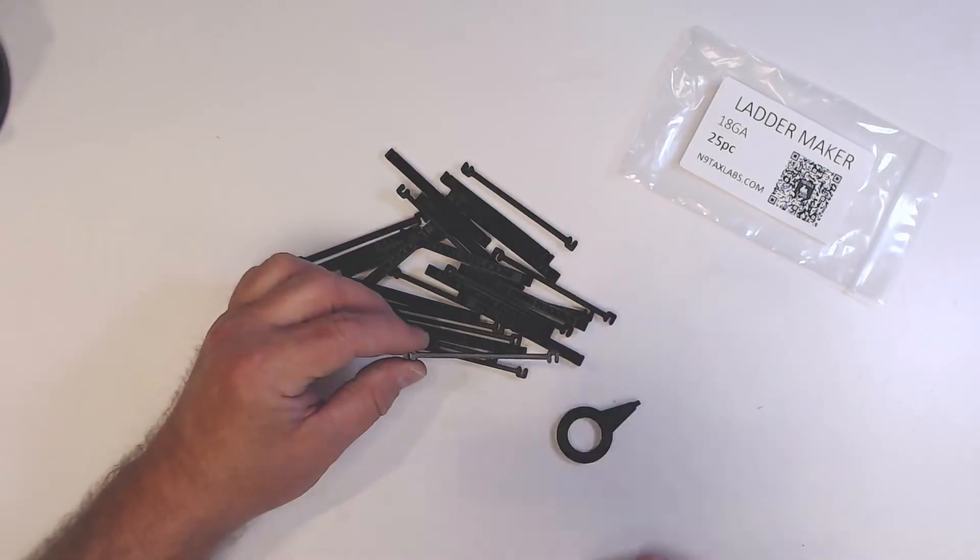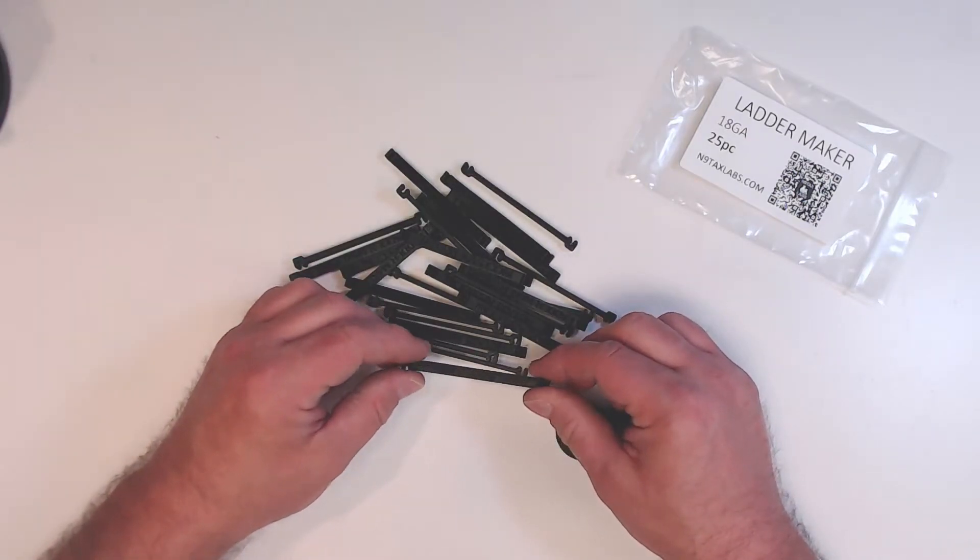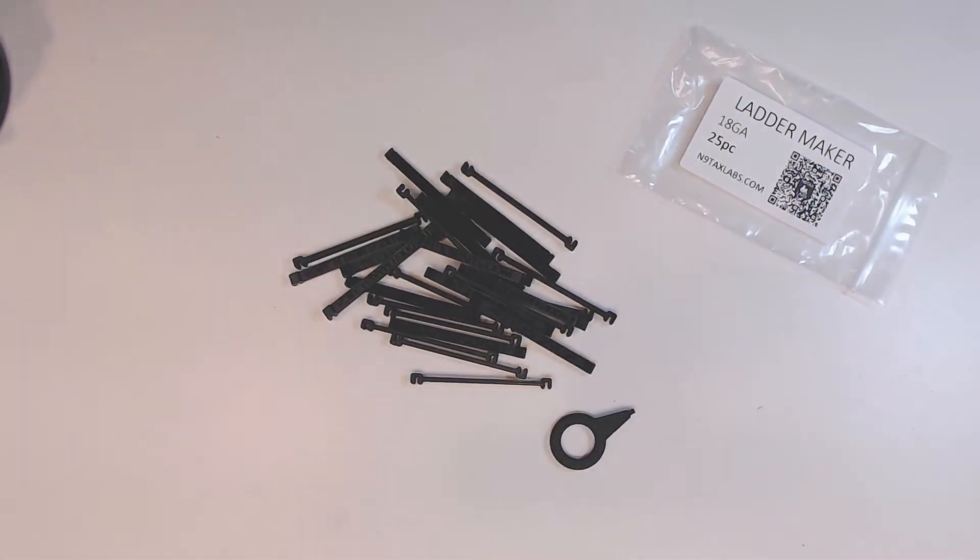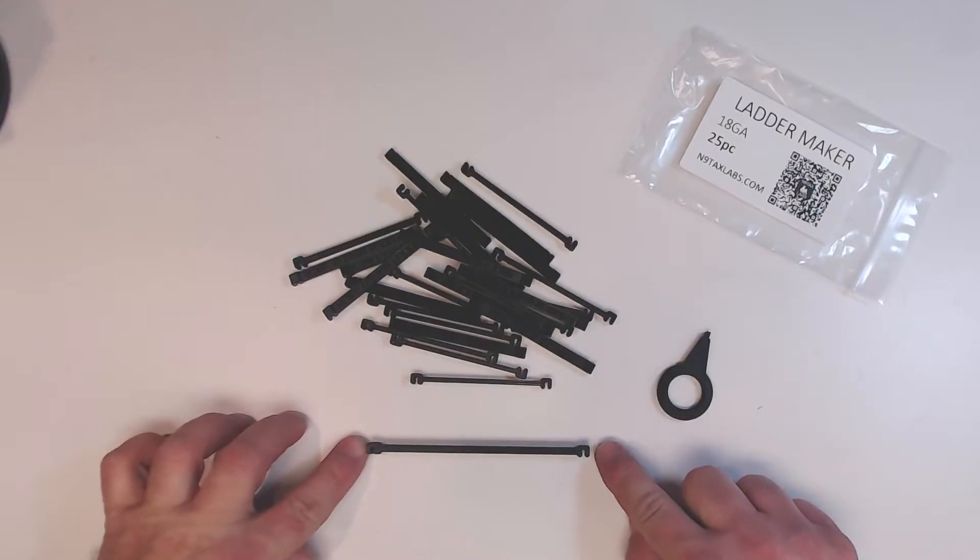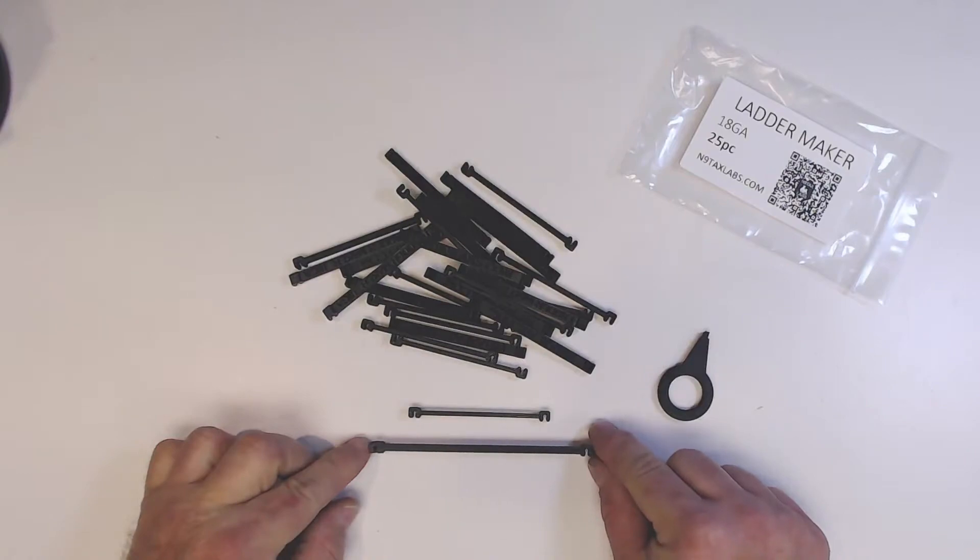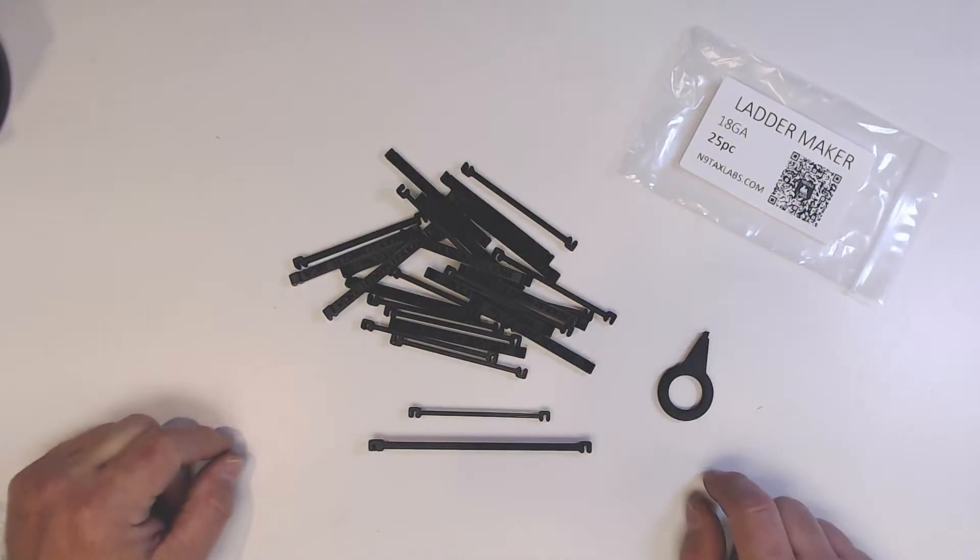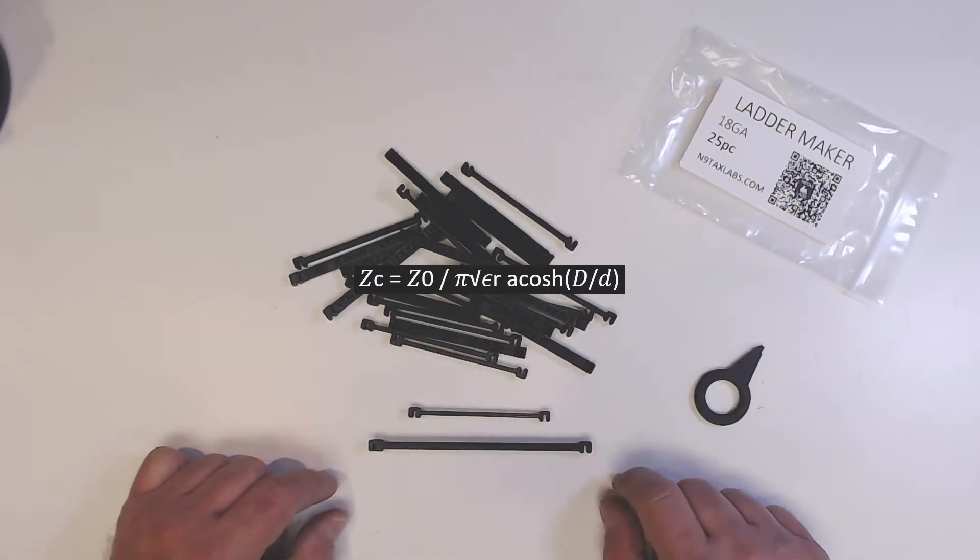As opposed to a ladder line spacer like this that's not specifically set lengthwise to the gauge, because they do change quite a bit between sizes. I can show you one that's made for 14 gauge wire, it's quite a bit bigger. All right, so here's one for 14 gauge wire. You can see it's quite a bit larger than the one for 18 gauge wire.